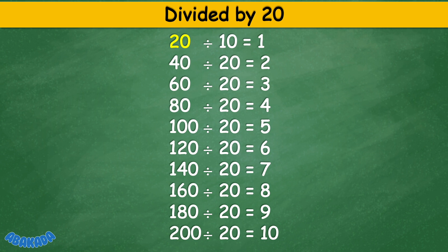Divided by 20. 20 divided by 20 equals 1. 40 divided by 20 equals 2. 60 divided by 20 equals 3. 80 divided by 20 equals 4. 100 divided by 20 equals 5. 120 divided by 20 equals 6. 140 divided by 20 equals 7. 160 divided by 20 equals 8. 180 divided by 20 equals 9. 200 divided by 20 equals 10.